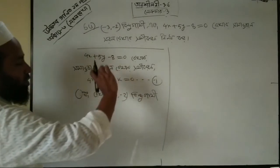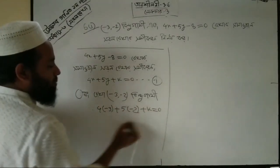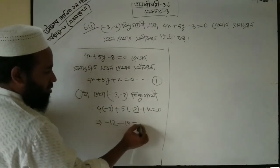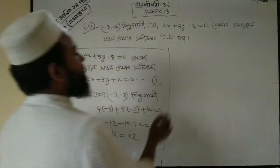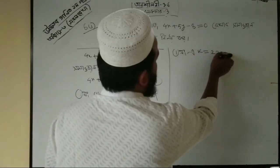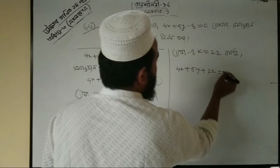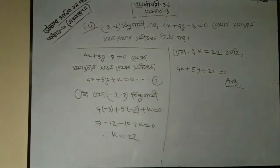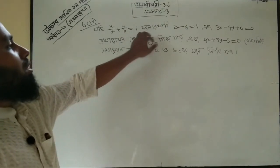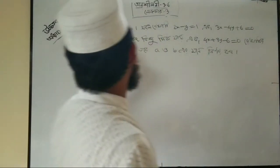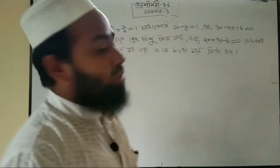The answer: 0 minus 12 minus 10 plus k equals 0, so k equals 22. Therefore k equals 22. From this, 3x minus 48 plus 6 equals 0, and solving gives k equals 0.